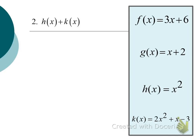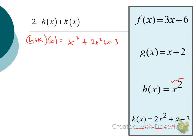Go ahead and try H of X plus K of X — we want to find H plus K of X. Stop the video and give that a shot. The solution: take the H definition, which is X squared, and add to it the K definition, which is 2X squared plus X minus 3. Combining like terms: X squared plus 2X squared gives 3X squared; no like terms for the X or the negative 3. So H plus K of X equals 3X squared plus X minus 3.